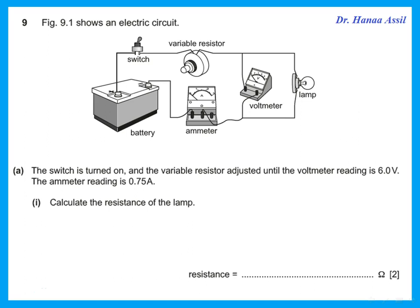This question shows an electric circuit with a battery, switch, variable resistor, voltmeter, lamp, and ammeter. The switch is closed and the variable resistor is adjusted until the voltmeter reads 6 volts. The ammeter reading is 0.75 amperes. Resistance equals voltage over current: R = V/I = 6 ÷ 0.75 = 8 ohms.